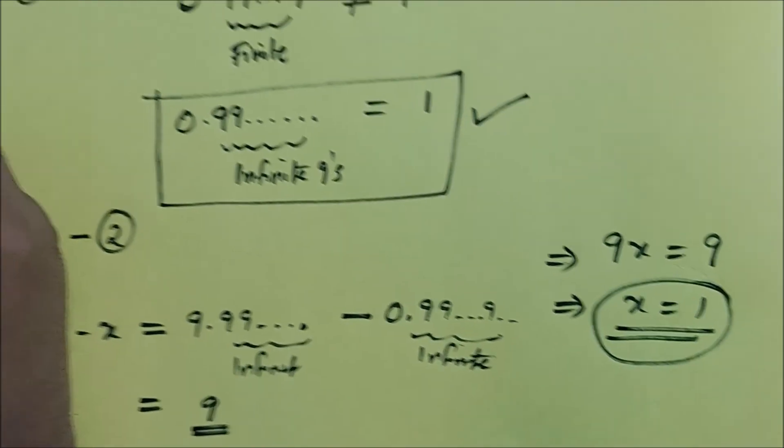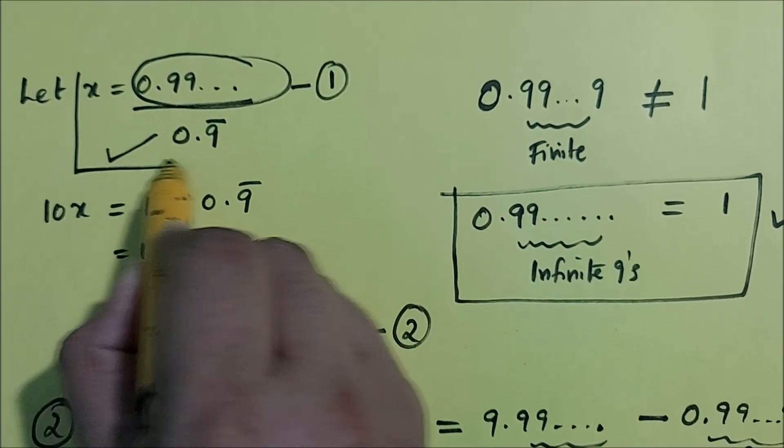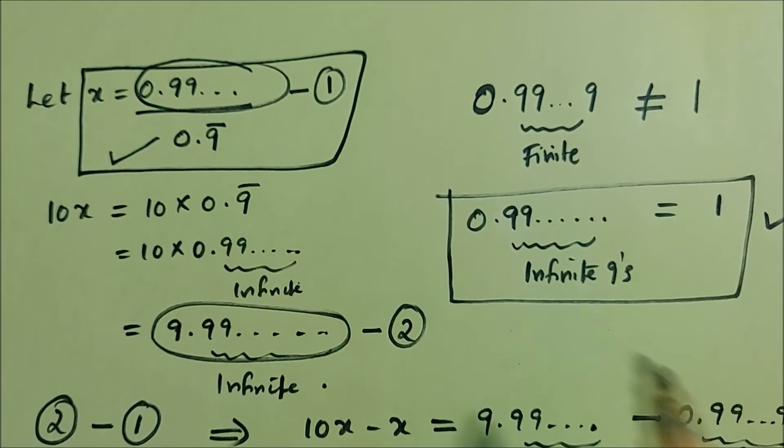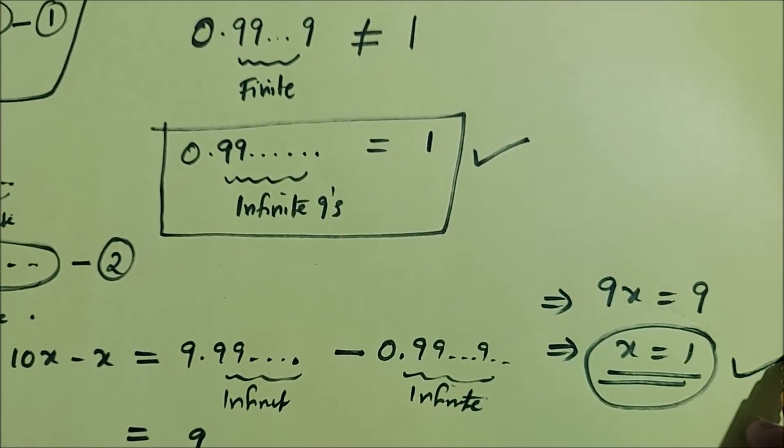But x was our 0.9 bar, and that is equal to 1. So finally we got that 0.9 bar equals 1, or in other words, 0 point infinite 9's is the same as 1. Hence proved.